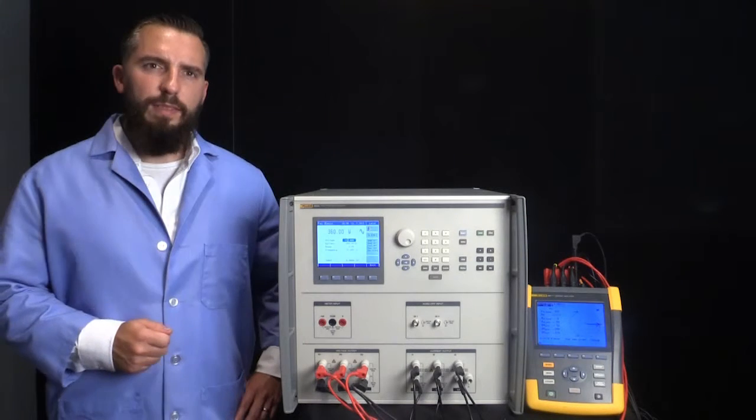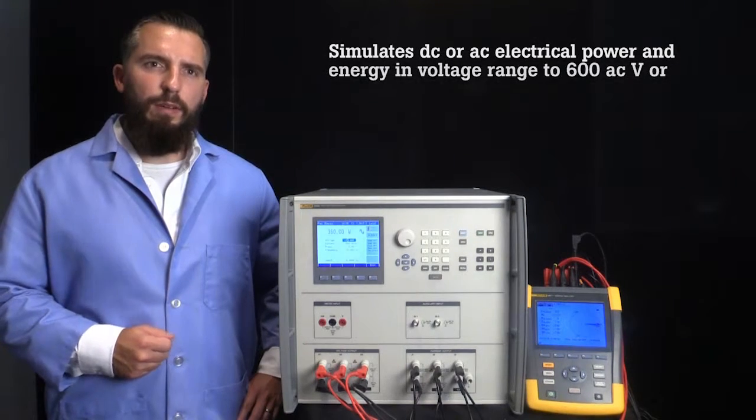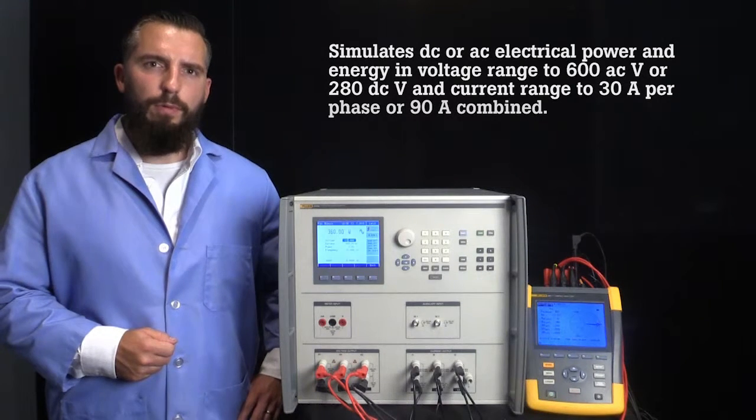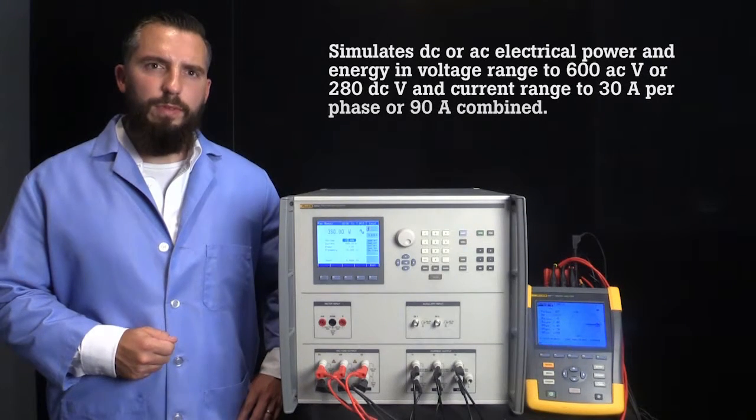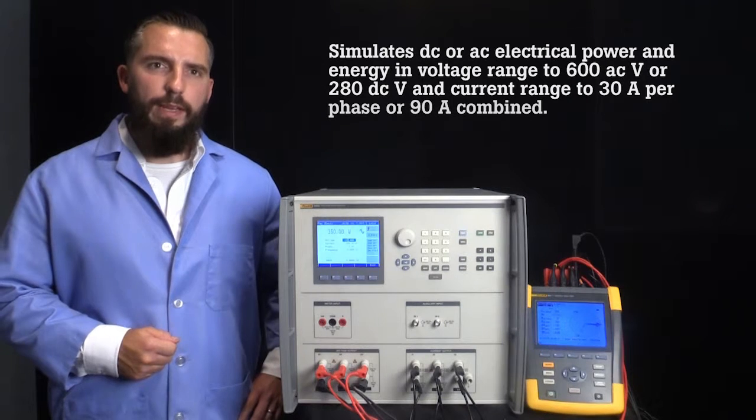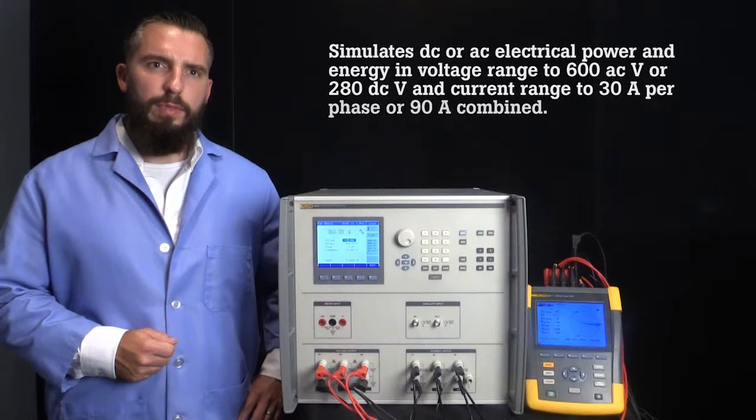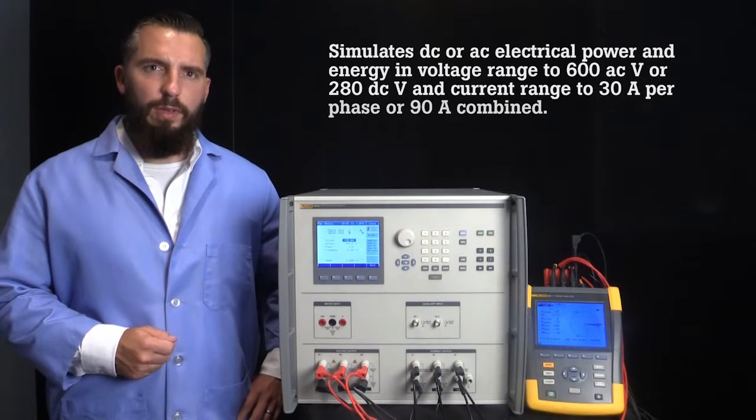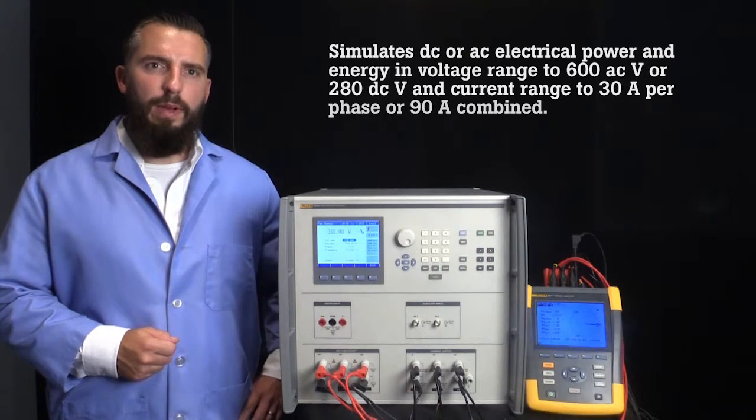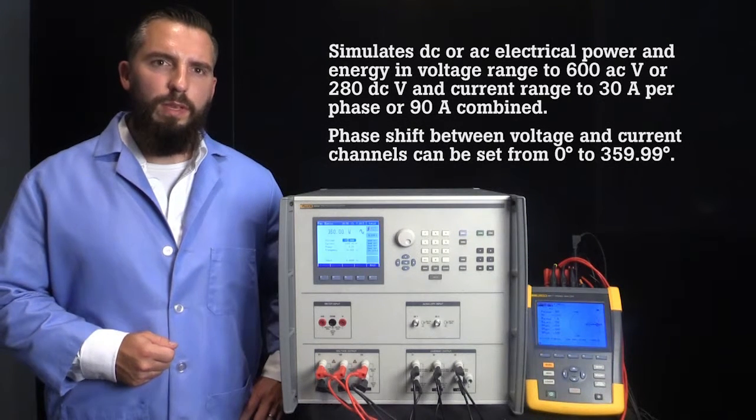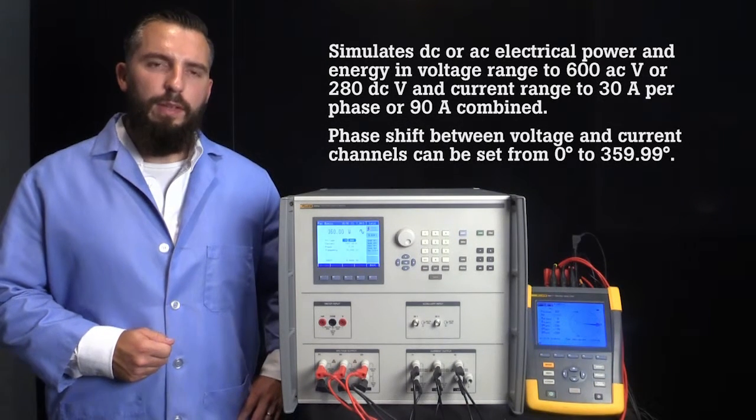The 6003A simulates DC or AC electrical power and energy in voltage ranges from 1 volt to 600 AC volts or 280 DC volts, and current ranges from 8 milliamps to 30 amps per phase, or 90 amps combined into one phase. Phase shift between voltage and current channels can be set from 0 degrees to 359.99 degrees with the best accuracy of 0.01 degree.